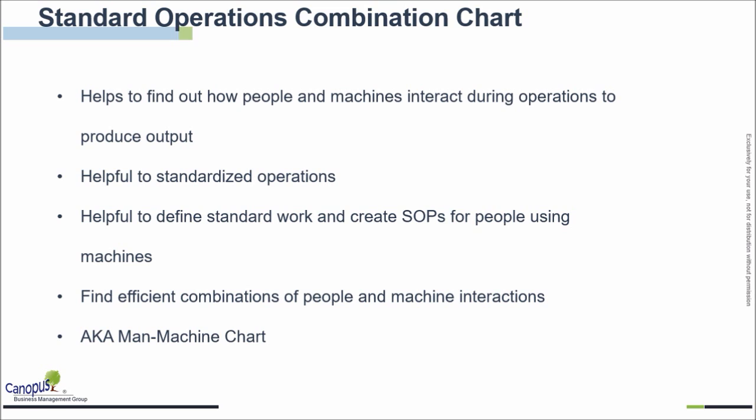So you would be able to efficiently combine people and machines and the way they interact to produce more value or reduce waste, or Muda, in the process.